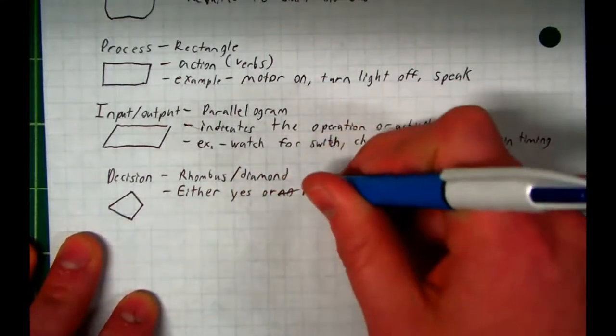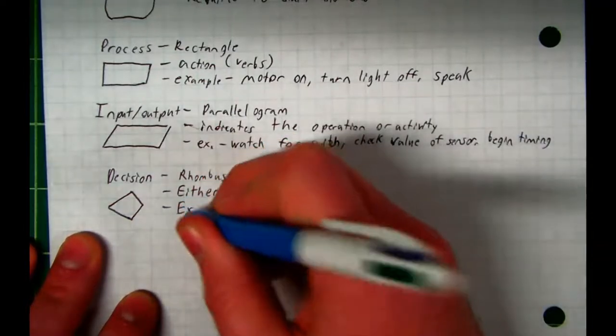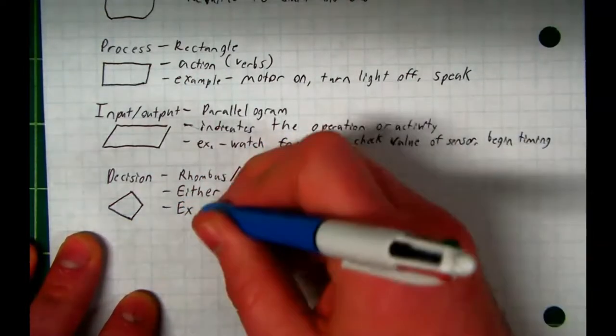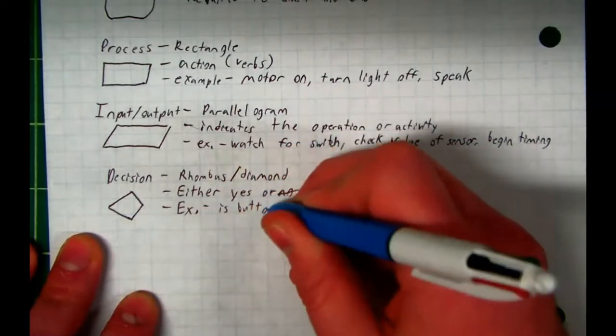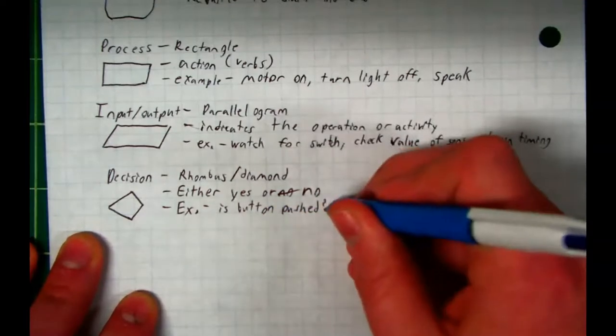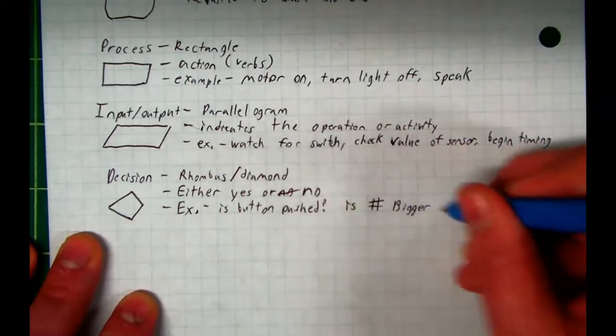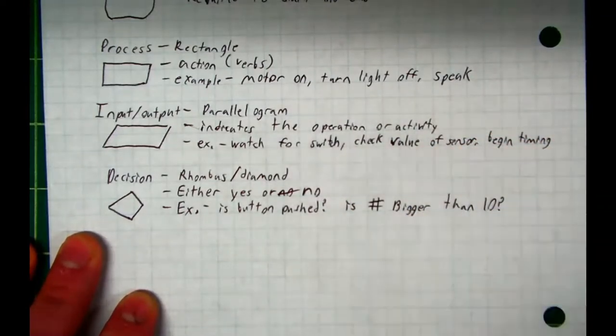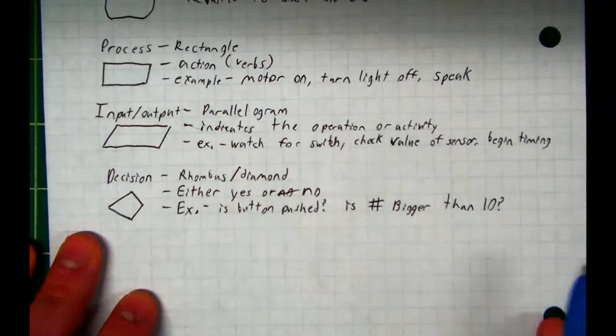Either yes or no. Examples, of course, are: Is the button pushed? It's either pushed or it's not. Is the number bigger than 10? So if I said 7, you would say no. If I said 11, you would say yes. Pretty simple, right?